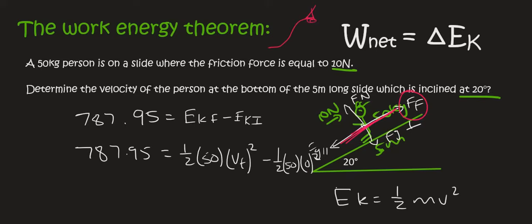And so now it's just a matter of solving. So 787.95 is equal to a half of 50, which is 25v squared. Now this whole part just becomes 0, and so that just falls away. And so we can say 787.95 divided by 25, and then you can square root your answer. And so we end up with a final velocity of 5.65 meters per second.